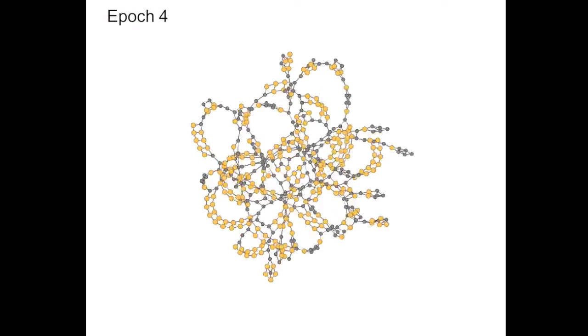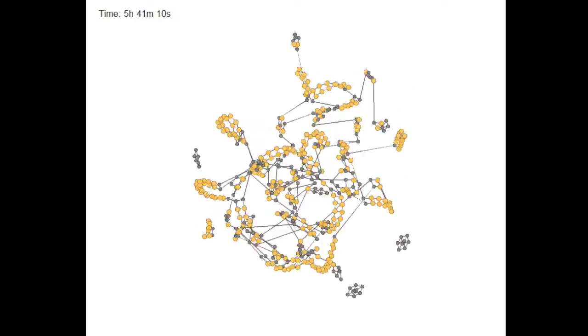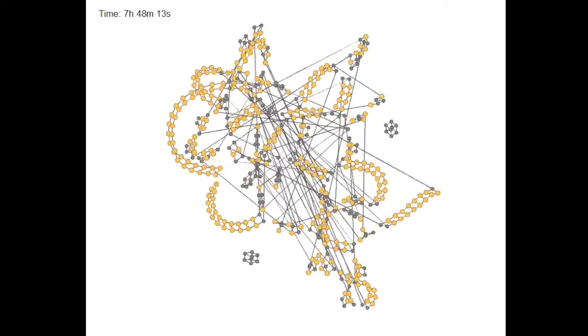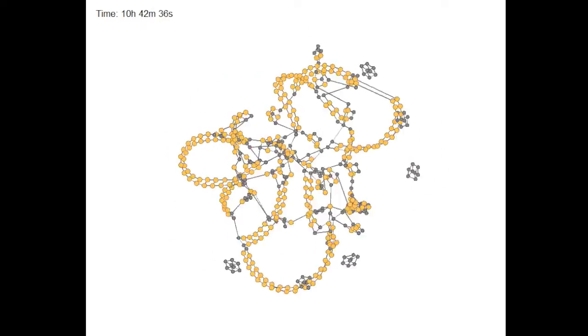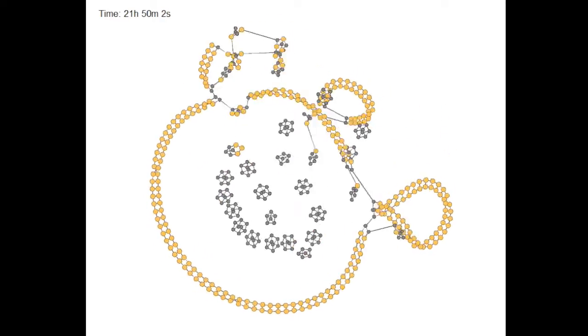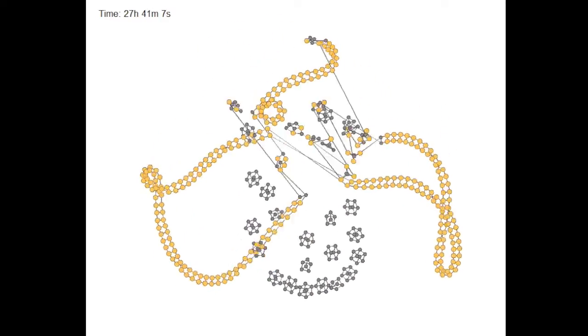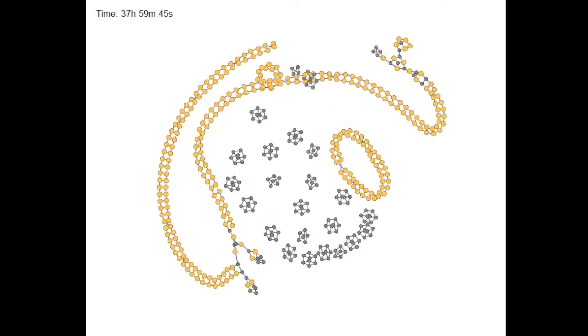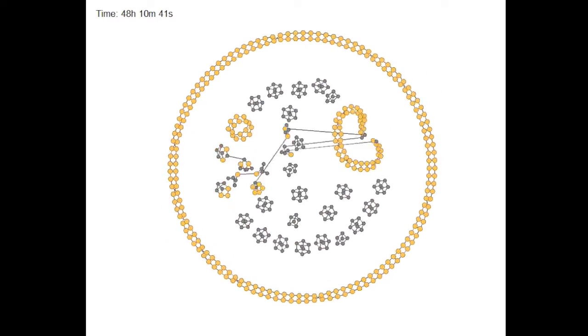This marks the beginning of epoch four. At this point, we can see that something remarkable is happening. What started as an unstructured mass is obviously self-assembling into a highly structured fibrillar aggregate. The size of the fibrillar portion continues to grow until it has incorporated most of the available monomers, leading to the final epoch.